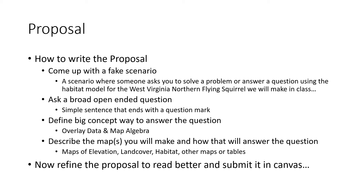The next point is to describe the map you're going to make and how you plan to use that to answer the question. Generally speaking, you would want to make a map of elevation above 909 meters, a map that identifies selected land covers across the state, and a habitat map that identifies the flying squirrel habitat across West Virginia. If you have to make other maps, it would be something like a map of West Virginia counties and the flying squirrel habitat in each county. Or maybe you want to make a table — a table is a really good way of showing that information. You'd list the names of all the counties with flying squirrel habitat and how much habitat is there.